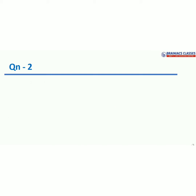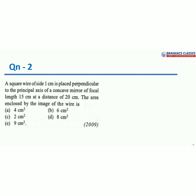We'll go to question number two, which is based on a mirror concept. A square wire of side 1 centimeter is placed perpendicular to the principal axis of a concave mirror of focal length 15 centimeters, and the object is at a distance of 20 centimeters. We want to find the area enclosed by the image. The device is a concave mirror. Given: f = −15 cm, u = −20 cm with appropriate sign conventions.